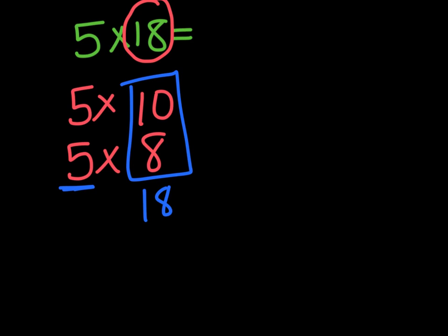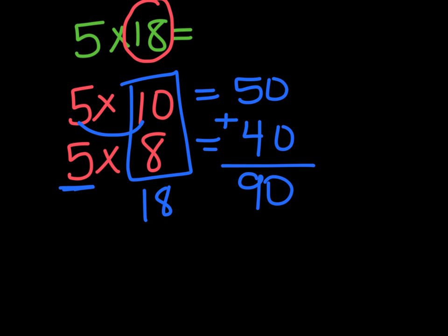So I'm going to do five times 10. So that is 50 because remember it's five times one. And then I add my zero and then I'm going to do five times eight. So count by five, eight times, you should get 40. And then I'm going to add those together. So my answer is 90. So five groups of 18 equal 90.